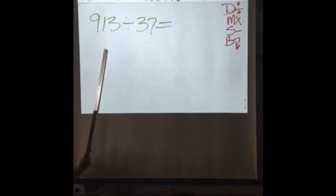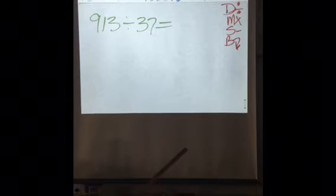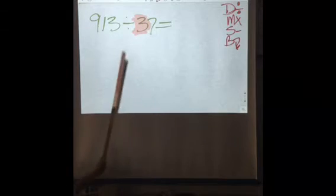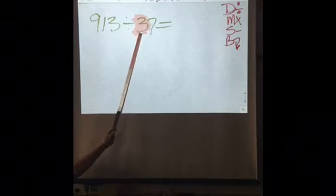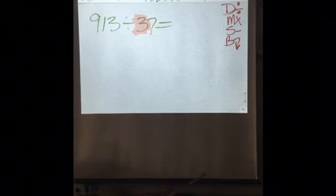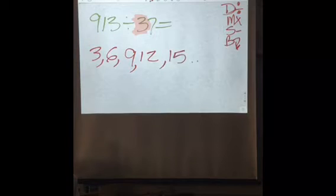I want to look at this 3 right here and I want to say what does my 3 go into. So if I said 3 times 1 is 3, 3 times 2 is 6, 3 times 3 is 9, 3 times 4 is 12, 3 times 5 is 15 and so on.